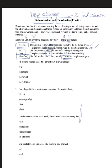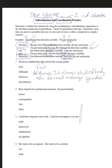Another example — Jill always studied hard; she earned only average grades. Using coordination: Jill always studied hard, but she earned only average grades. Using subordination: although Jill always studied hard, she earned average grades — comma required when starting with the dependent word. Using a conjunctive adverb: Jill always studied hard; however, she earned only average grades — semicolon before, comma after.